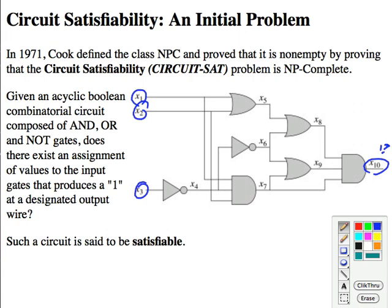So recall that we have to show first that circuit-SAT is in NP and then we have to show that every other problem in NP is polynomially reducible to it, which is the hard part.